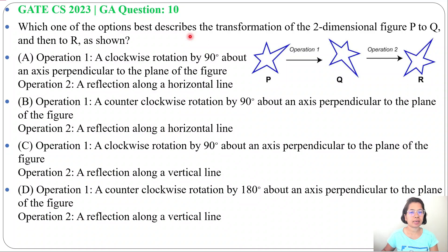Let's solve a previous question of general aptitude. This question was asked in GATE CH 2023 GA question number 10. Which one of the options best describes the transformation of two-dimensional figure P to Q and then to R as shown, and four options are given.